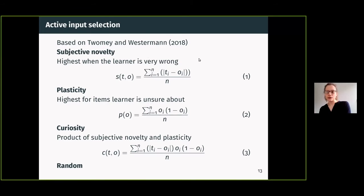Then we have a second measure which is called plasticity, and this is actually the highest for those items for which the learner is kind of like unsure, so it hasn't made up its mind very clearly. For those of you who are familiar with how neural networks are trained, this is actually based on the gradient of the output activation function.